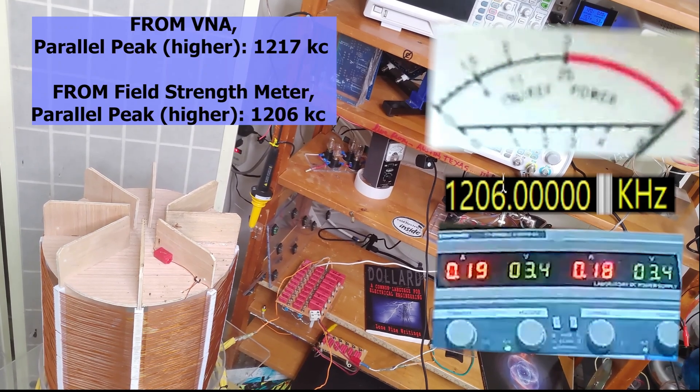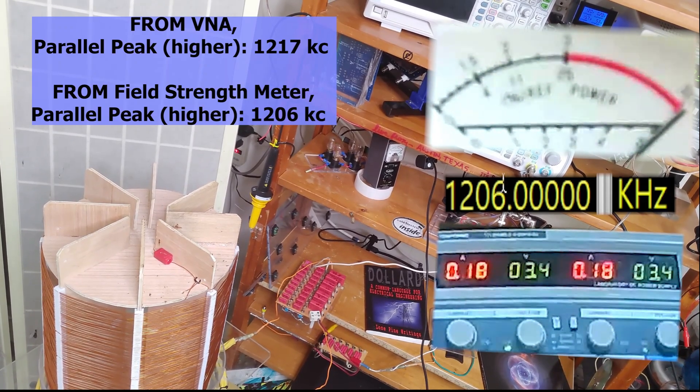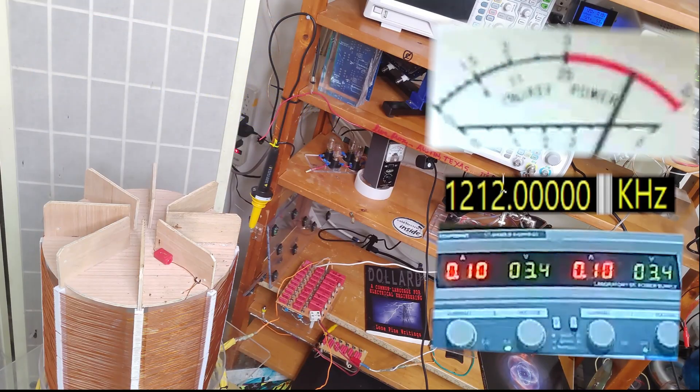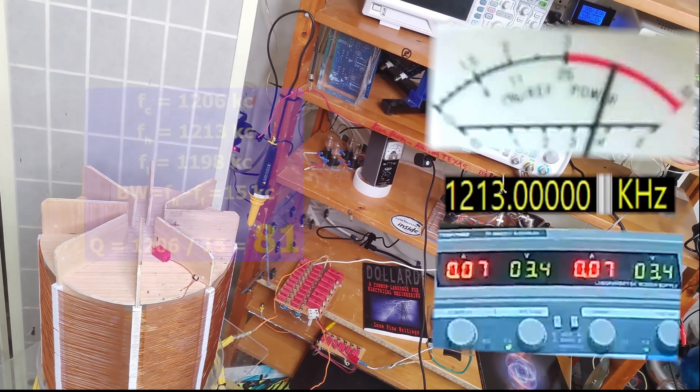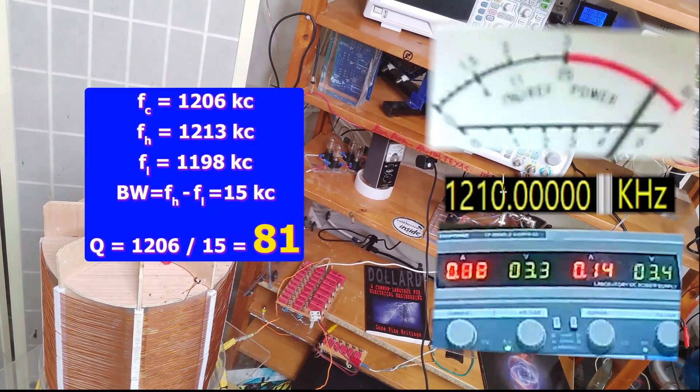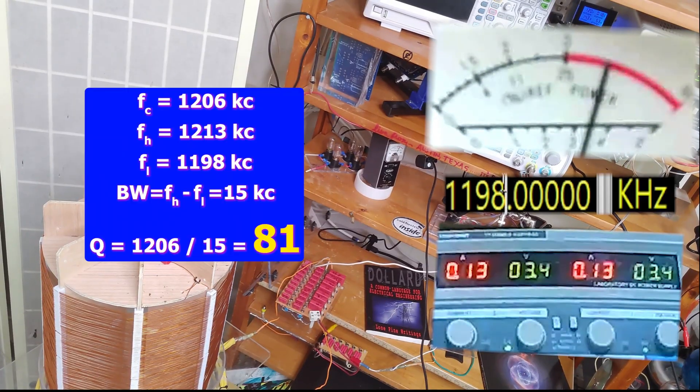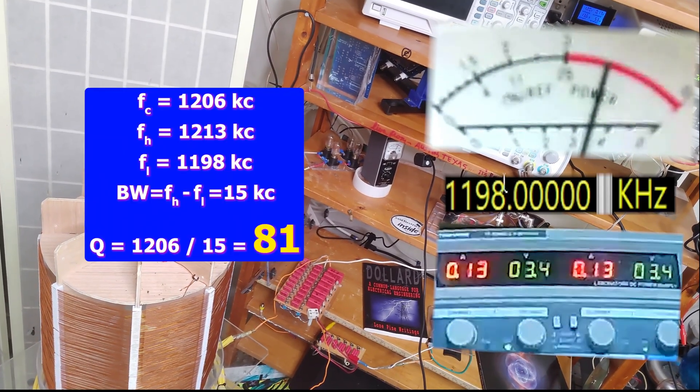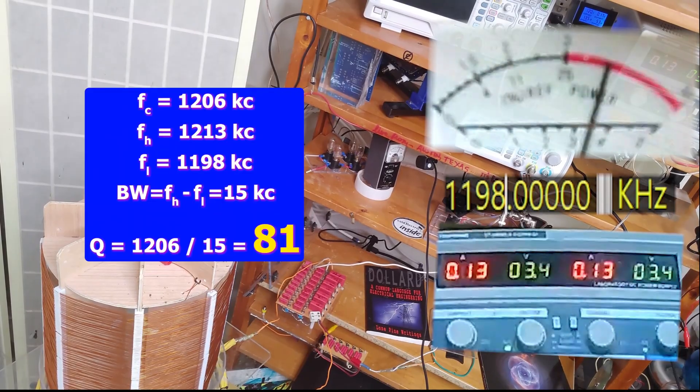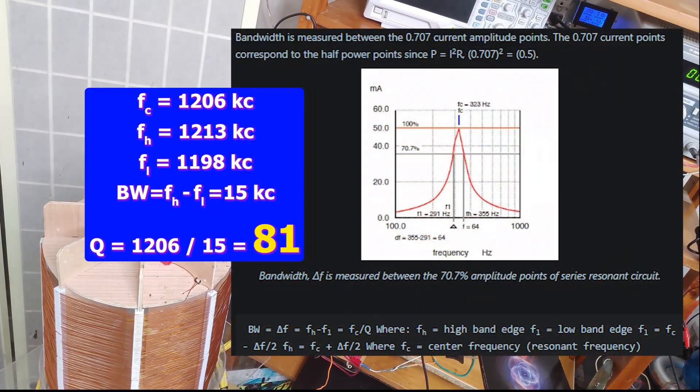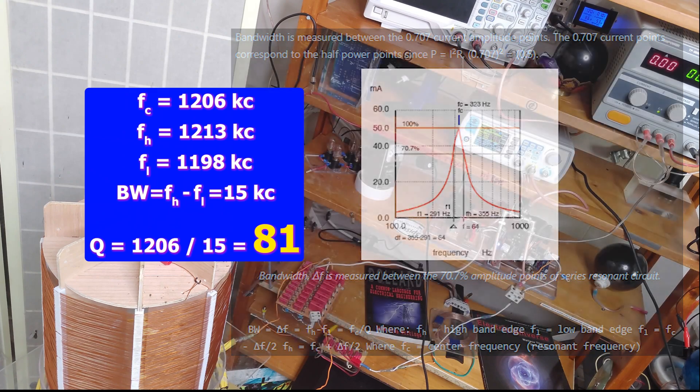Let's see what brings it down to 70% above and below the resonant frequency. The upper and the lower. There is one at 1213 kilocycles and 1198 kilocycles. To get the bandwidth, we'll subtract 1198 from 1213, and then we'll divide the resonant frequency by that number to get the quality factor Q.